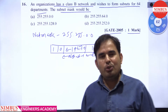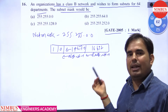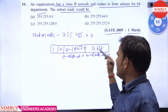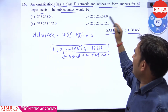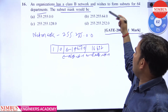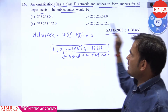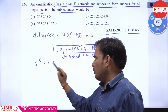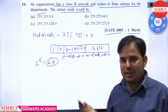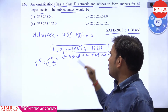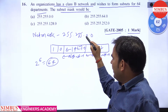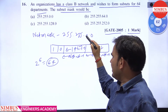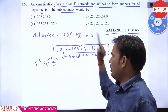As we know, subnet bits can be borrowed from the host ID part — from the host bits. The question wishes to form subnets for 64 departments. Since 2 to the power 6 equals 64, we need to borrow 6 bits and place 6 bits of 1 in the third octet.